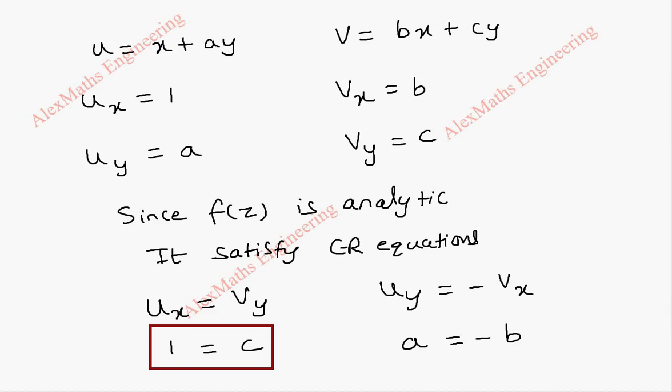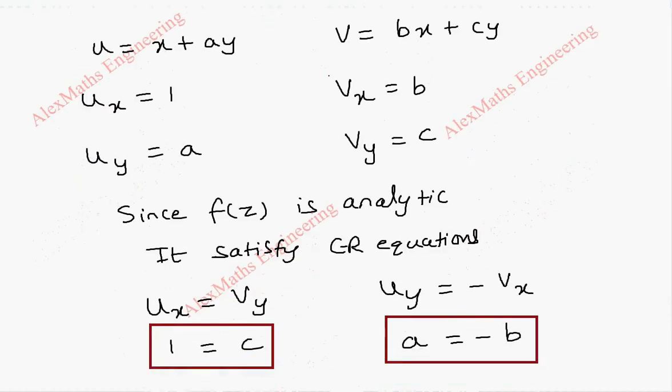So, here we are not able to get the numerical value, but a relation between a and b. So, if b is 1, a is minus 1. If b is 2, a is minus 2. If b is negative number, a will be positive. So, in this way, we can find the constants a, b and c.